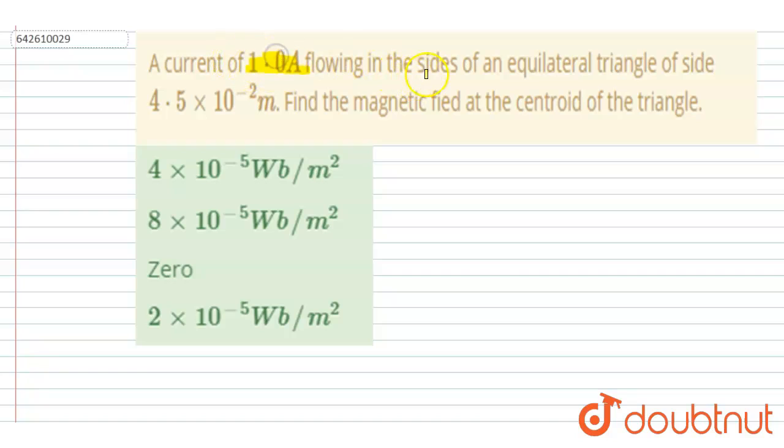ampere flowing in the sides of an equilateral triangle of side length 4.5 × 10^-2 m. Find the magnetic field at the centroid of the triangle. So if you see, because of any current carrying wire, if I see the magnetic field at a distance r